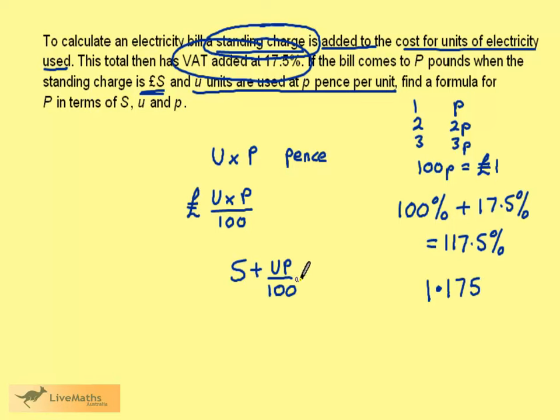We need to multiply this by this, encasing this in brackets ensures it's done first. We then multiply by 1.175. This is the final bill, capital P.